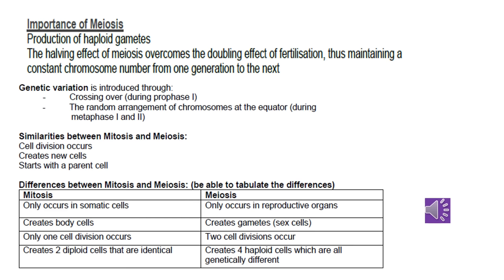Why is meiosis so important? During meiosis, the chromosome number is halved from the diploid to the haploid number. This ensures that sex cells have half the chromosomes so that when fertilization occurs, the zygote formed has the correct number of chromosomes. Gametes with different gene combinations are formed during meiosis, leading to genetic variation in a population, which ensures a better chance of survival. Genetic variation is made possible through crossing over during prophase 1 and the random arrangement of chromosomes during metaphase 1 and 2. In summary: meiosis ensures the chromosome number is halved, and meiosis introduces genetic variation.